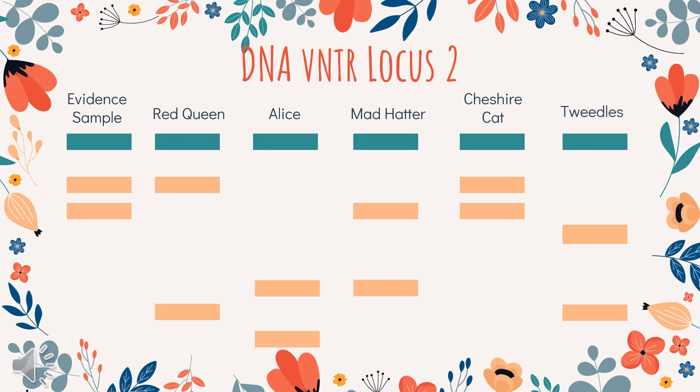Looking at this locus, I'd like for you to pause the video and try to determine who is guilty by yourself. Did you figure it out? Well, based on what we found from Locus 1 and the banding patterns we see here at Locus 2, we can deduce that the Red Queen, the Mad Hatter, and the Tweedled twins are innocent as their banding patterns do not match the evidence sample found at the crime scene. Although Alice may have looked guilty at the beginning, she is exonerated from the crime as her DNA banding patterns from this locus are not a match either.